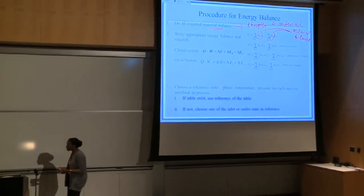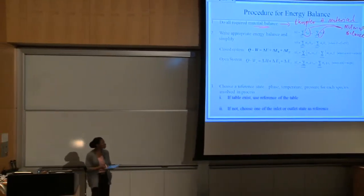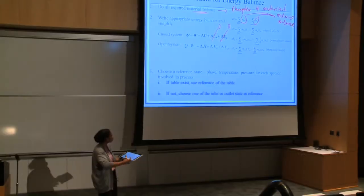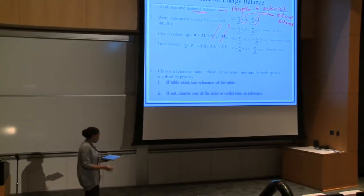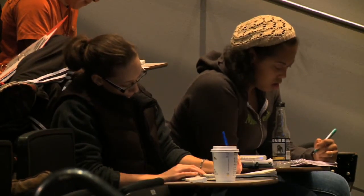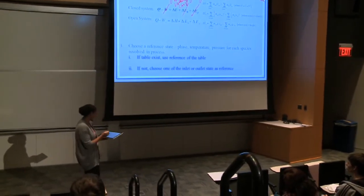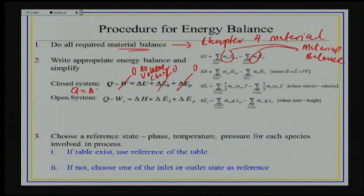You have to decide whether you have an open or a closed system. In a closed system, we said that kinetic energy and potential energy is often zero, because we're typically not moving the batch from one location to another. And work is zero when there's no volume change — if you have no change in volume, then work has to be zero. So Q is often equal to delta U for the closed system. For the open system, Q is equal to delta H if there are no moving parts and kinetic and potential energy is negligible.